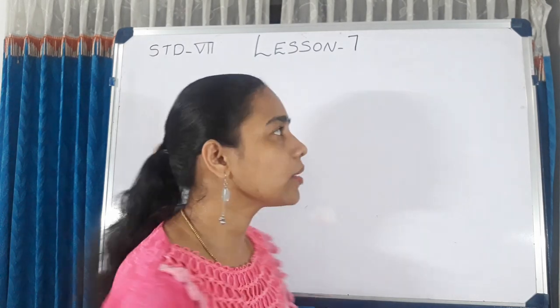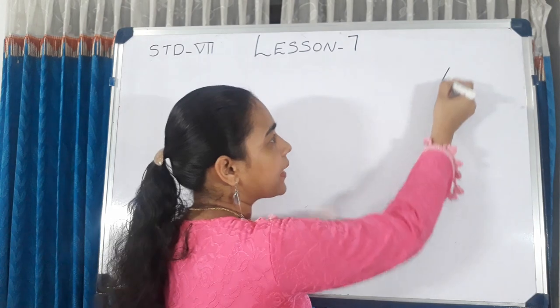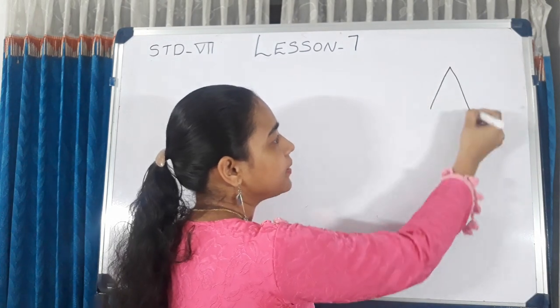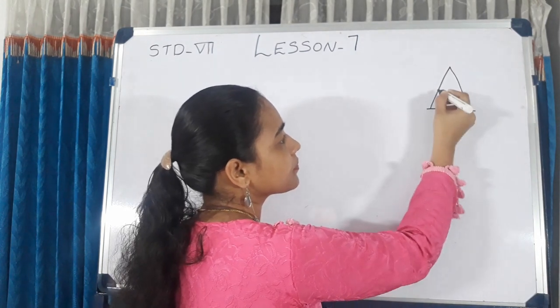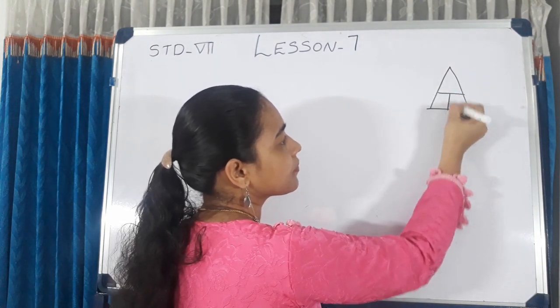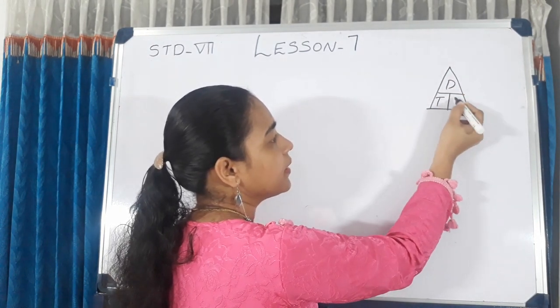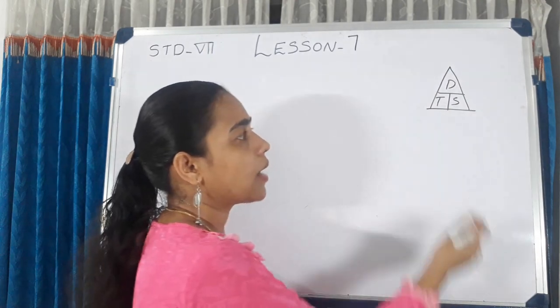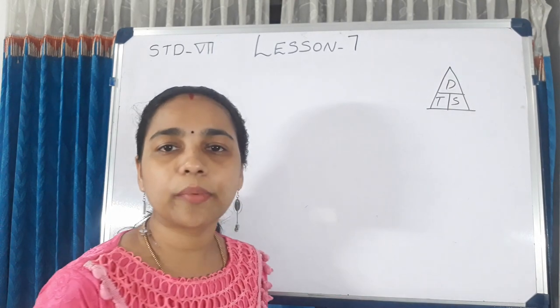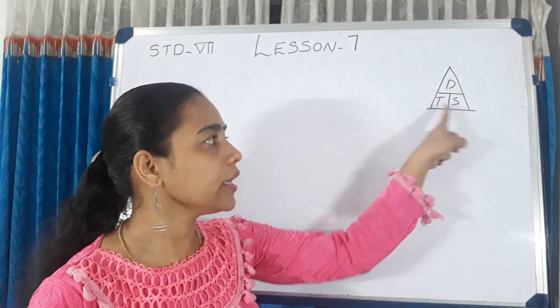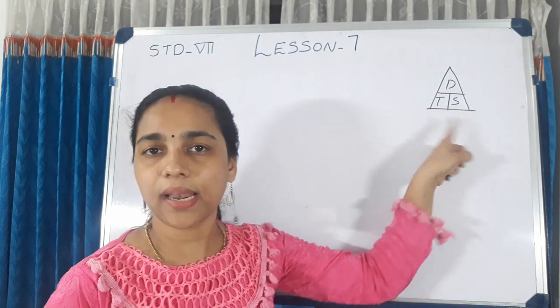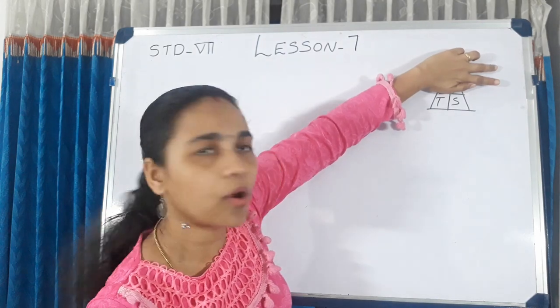What is the formula? The DTS triangle. Distance equals T into S (Time multiplied by Speed).